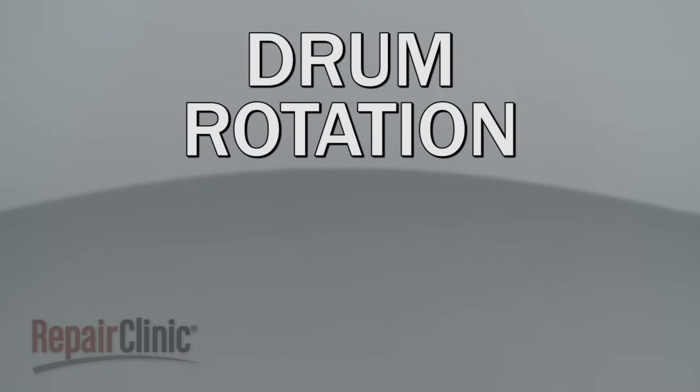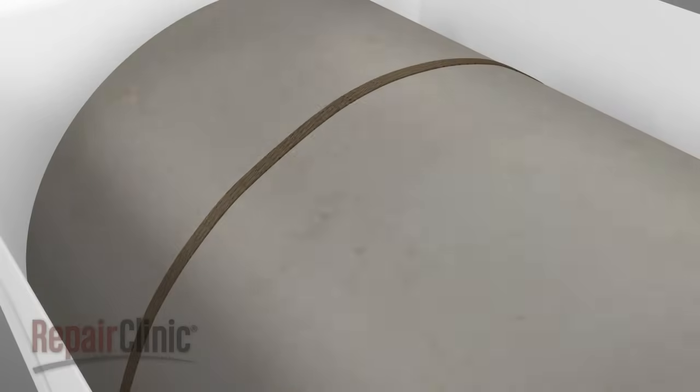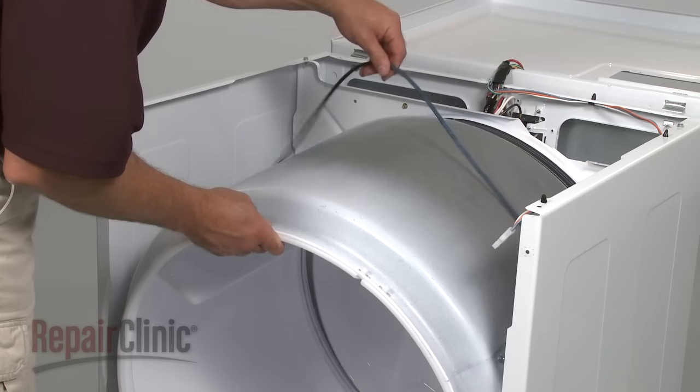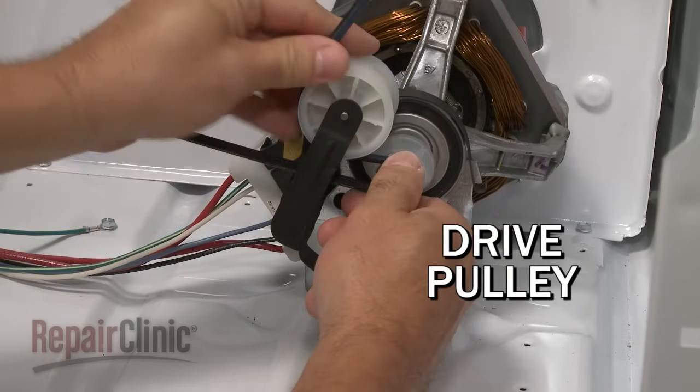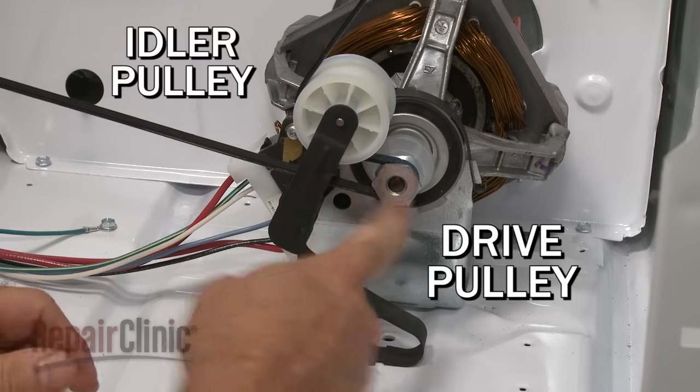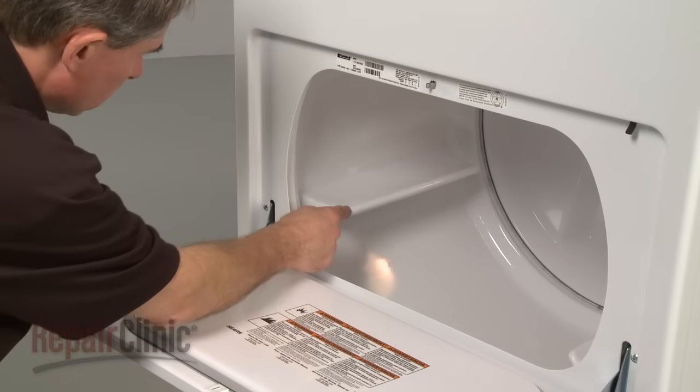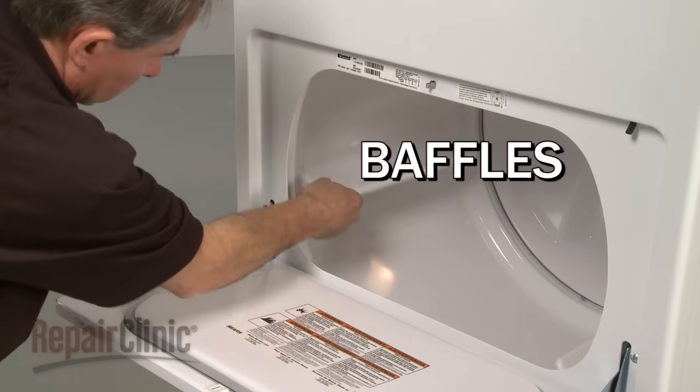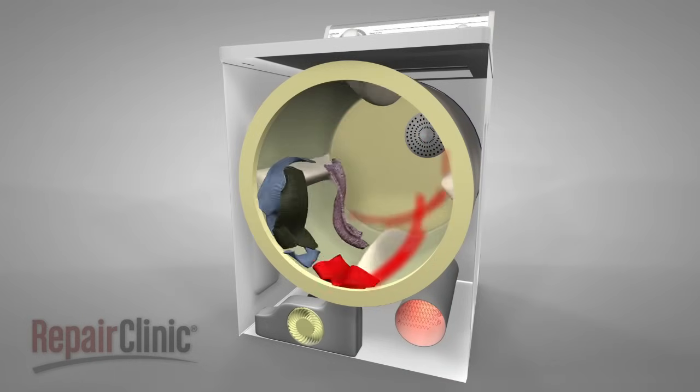As the blower wheel draws the air into the dryer, and the heating element heats it, the drum is rotated by a drive belt. The belt goes around the entire drum, and is looped onto a drive pulley on the motor, which drives the belt, and around an idler pulley, which puts tension on the belt. The drum has baffles inside to lift and rotate the clothes, which is an important step in the process, as it allows the heated air to dry the clothes evenly.